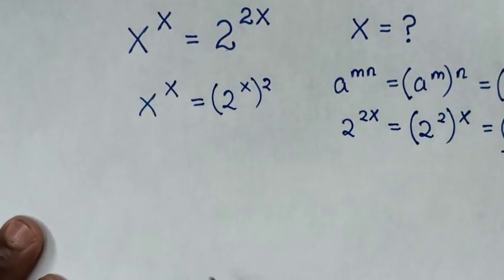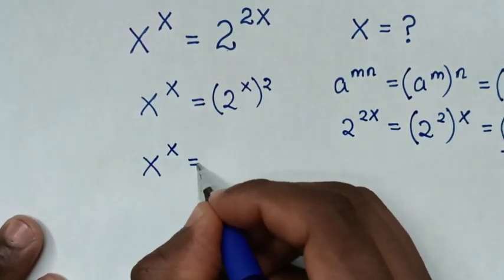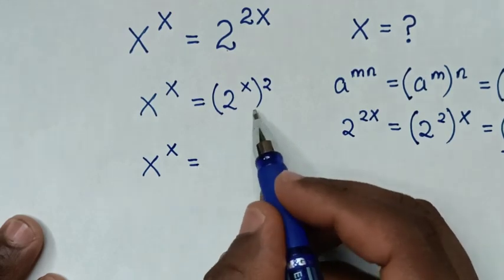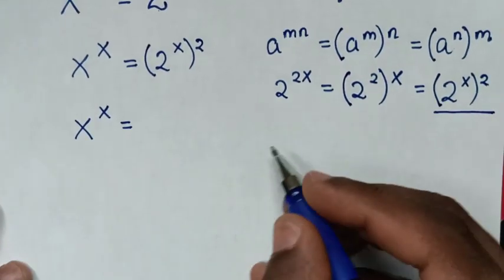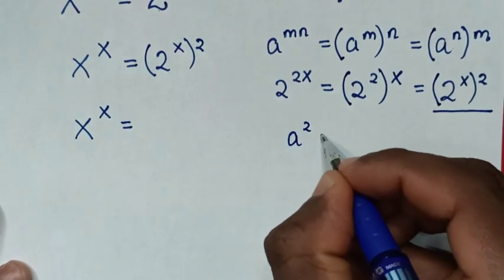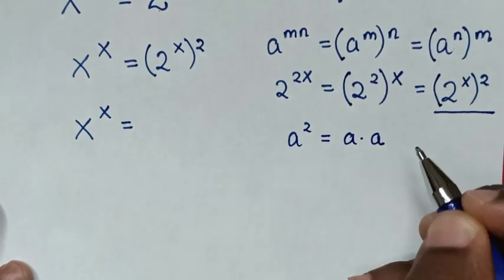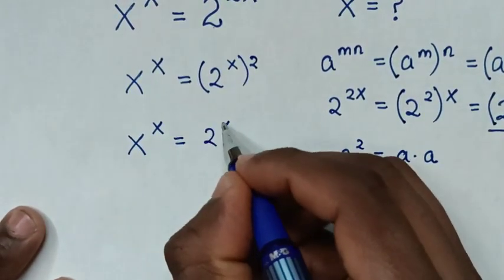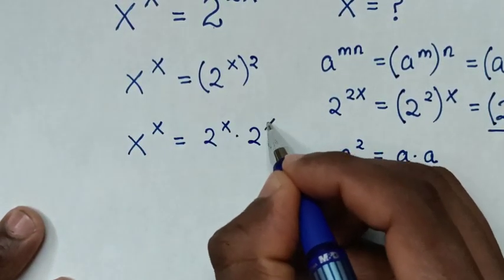In the next step, x power of x is equal to 2 power of x bracket squared. We will apply the rule that a squared is equal to a times a. So from here it will be 2 power of x times 2 power of x.